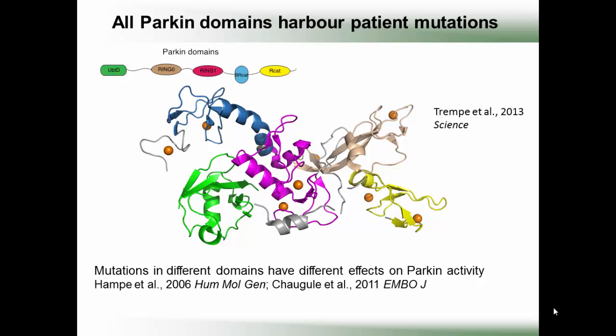We showed in 2011 that Parkin is not a constitutively active molecule — in fact it's auto-inhibited by the UBL domain. The recent crystal structure from the Fon and Goering groups shows that there are multiple interactions between domains. For example, the ubiquitin-like domain packs against RING1, and the RING0 sits on top of the required-for-catalysis RCAT domain.